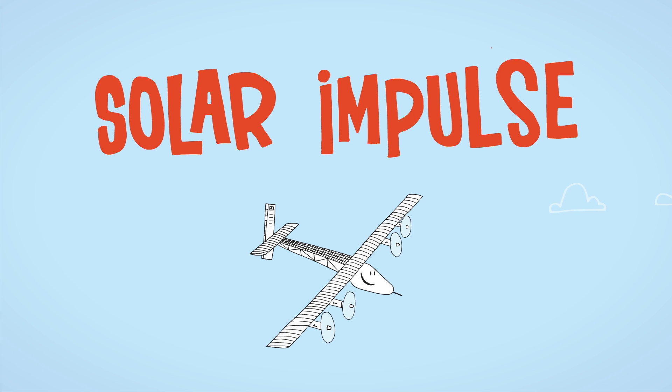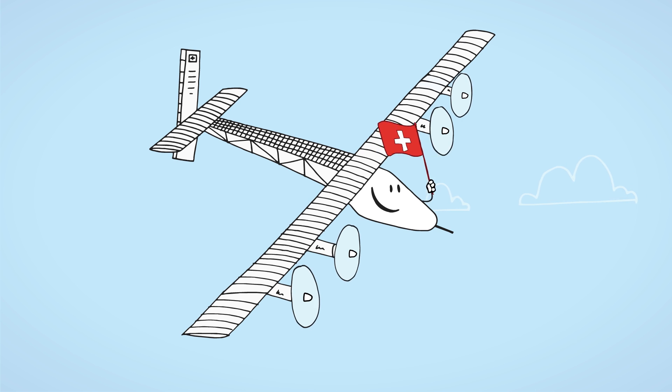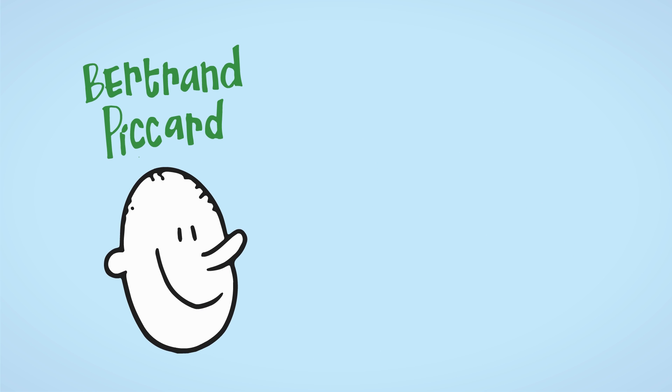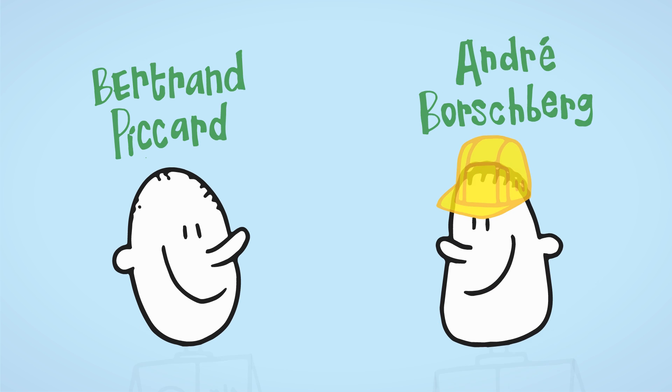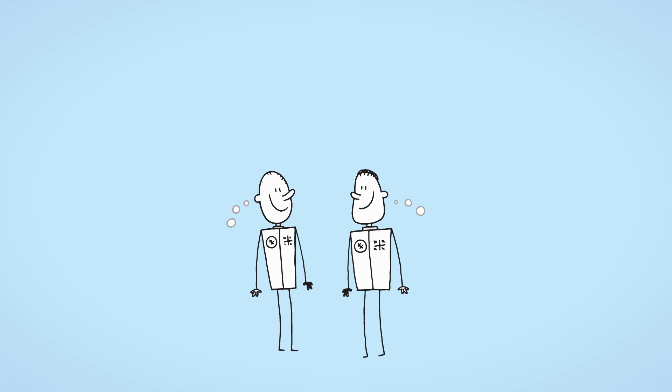Solar Impulse was built to convey such a message. This airplane is an idea of Swiss explorer Bertrand Picard, a visionary pioneer who teamed up with the engineer and entrepreneur André Borchberg in 2003. Together they made it real.